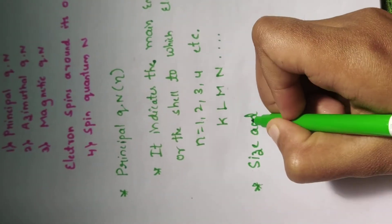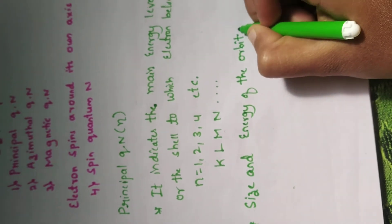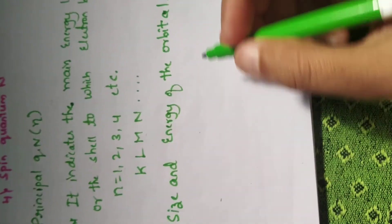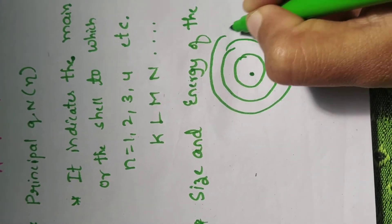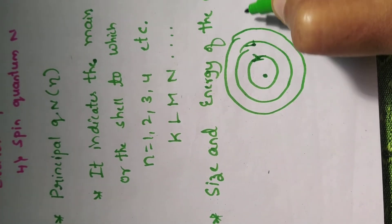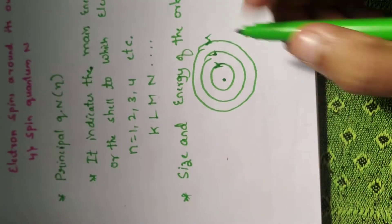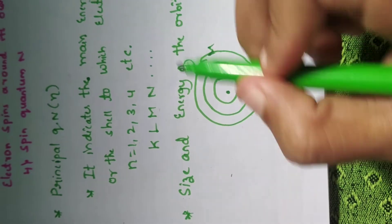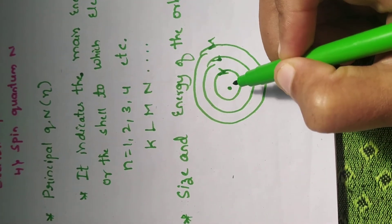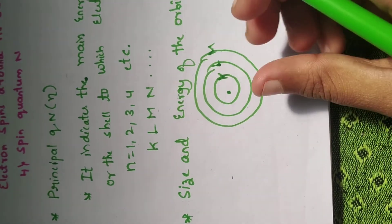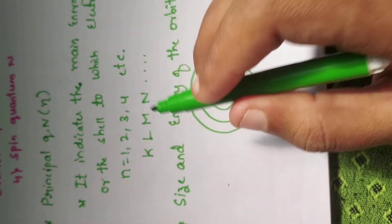If you consider this as a nucleus, this is the K shell, this is the L shell, this is the M shell — these are the main energy levels. As the value of n increases, the shells are also increasing, so the principal quantum number determines the size of the orbital. When electrons are present closer to the nucleus, energy is less; when electrons move further away from the nucleus, that is when the value of n increases, energy is also increasing.